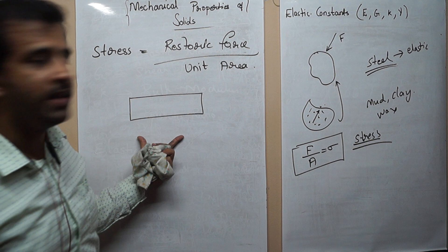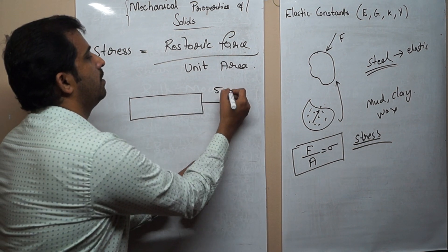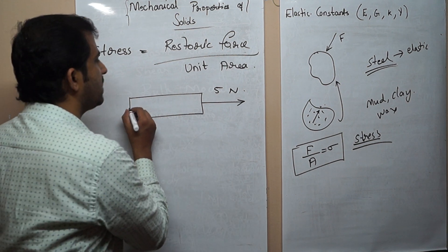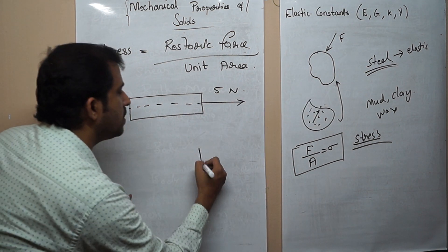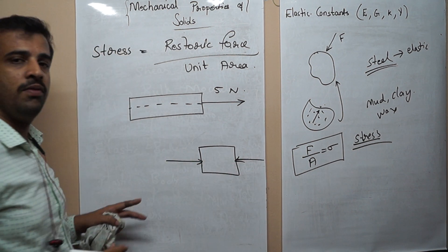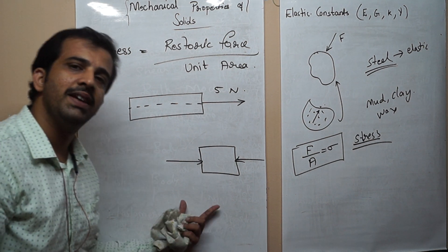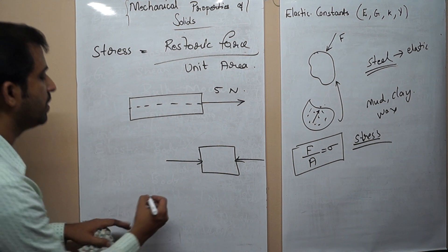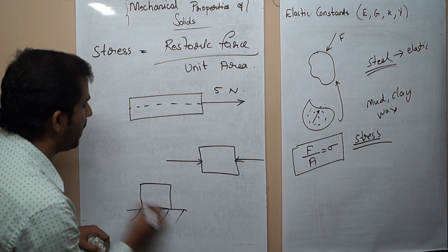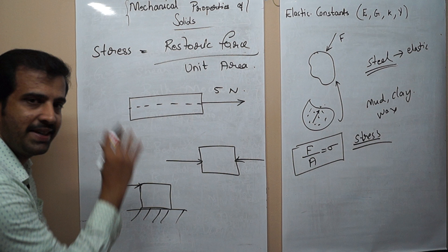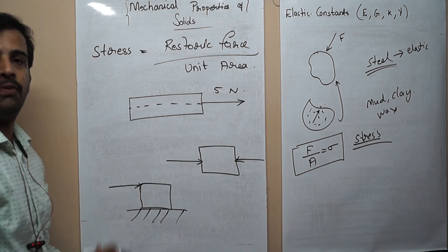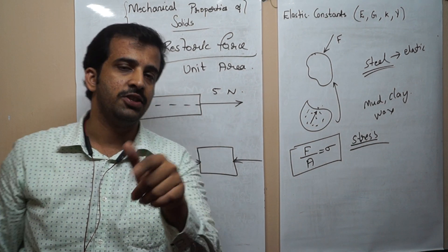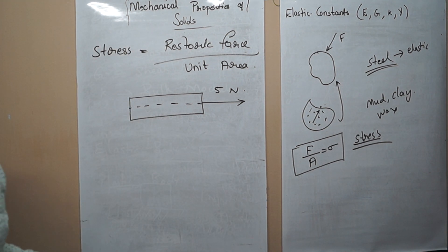Consider an iron rod. If we apply a tensile force — that is, a force along the axis directed outward — the body gets elongated and we get a tensile stress. If we apply the force inward, that is a compressive force, and we get a compressive stress. There is also a third type: if the body is rigidly fixed at the bottom and we apply a tangential force to the surface, the surface gets sheared — this is a tangential force. So there are three types of forces: tensile, compressive, and tangential.